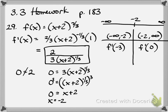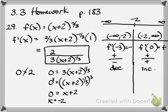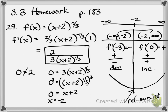Plugging negative 3 into the first derivative: the numerator is positive, but negative 3 plus 2 is negative, so the denominator is negative. This gives a negative result — the function is decreasing on that interval. Plugging in 0 gives a positive numerator and 0 + 2 = 2 is positive in the denominator, so this interval is increasing. Decreasing then increasing means there is a relative minimum at x = negative 2.